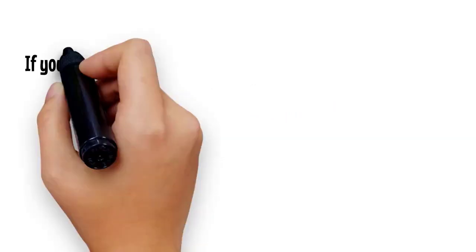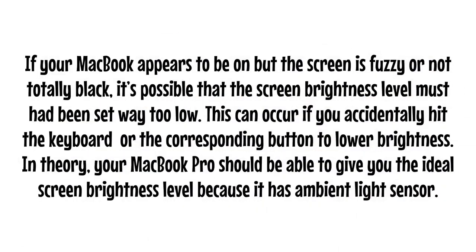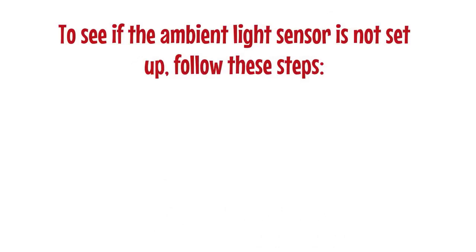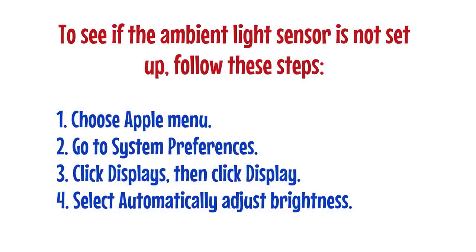If your MacBook appears to be on but the screen is dim or not totally black, it's possible that the screen brightness level has been set way too low. This can occur if you accidentally hit the keyboard button to lower brightness. Your MacBook Pro has an ambient light sensor to set ideal brightness — if the sensor is damaged, it may change screen brightness incorrectly. To check: go to Apple Menu, then System Preferences, click Displays, then select 'Automatically adjust brightness.'